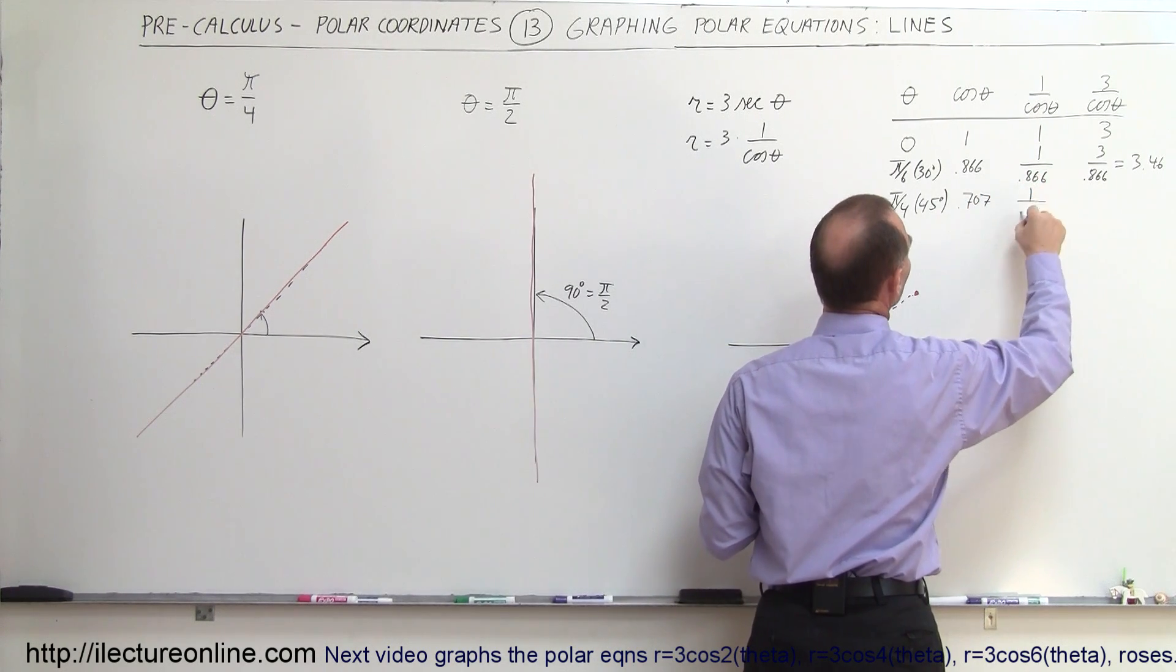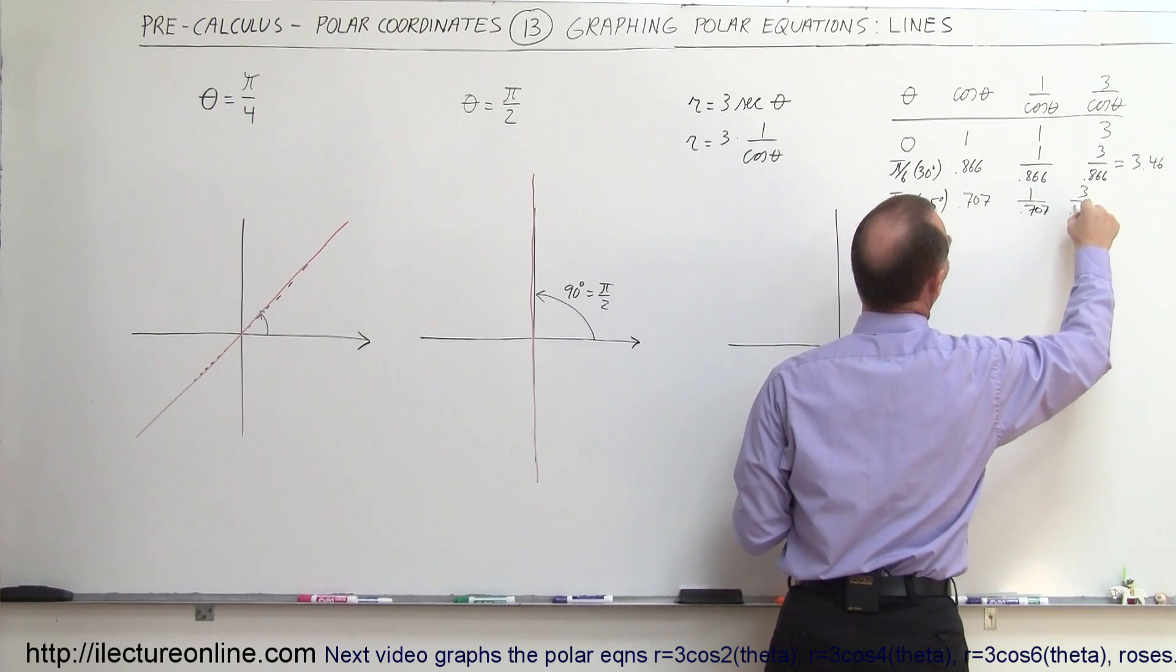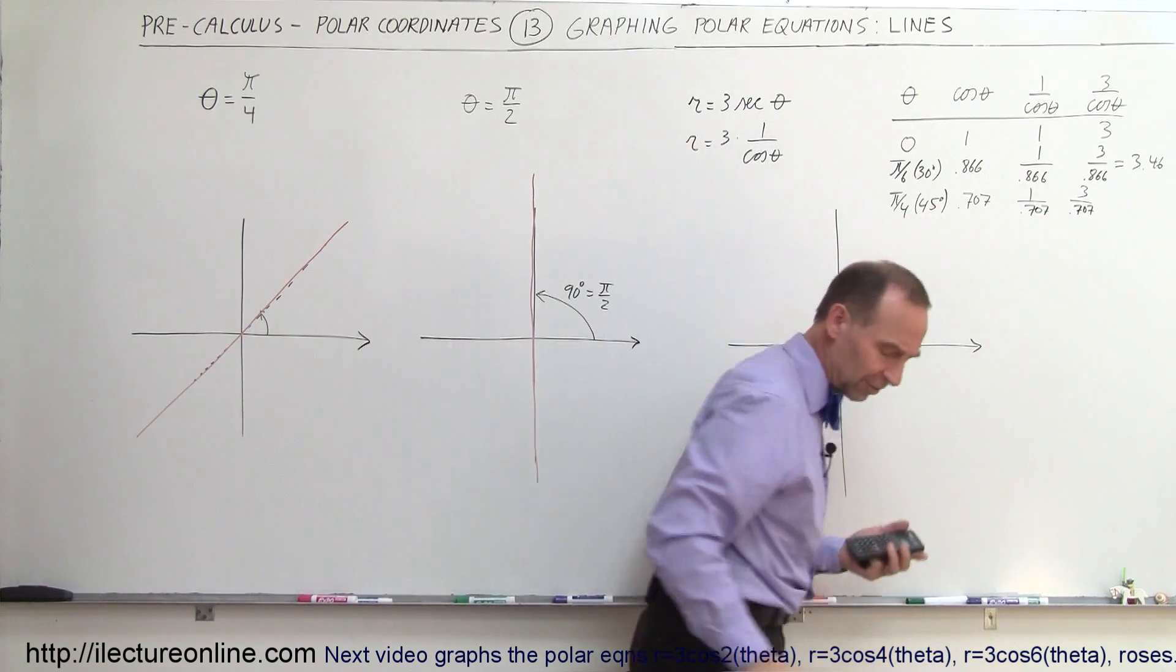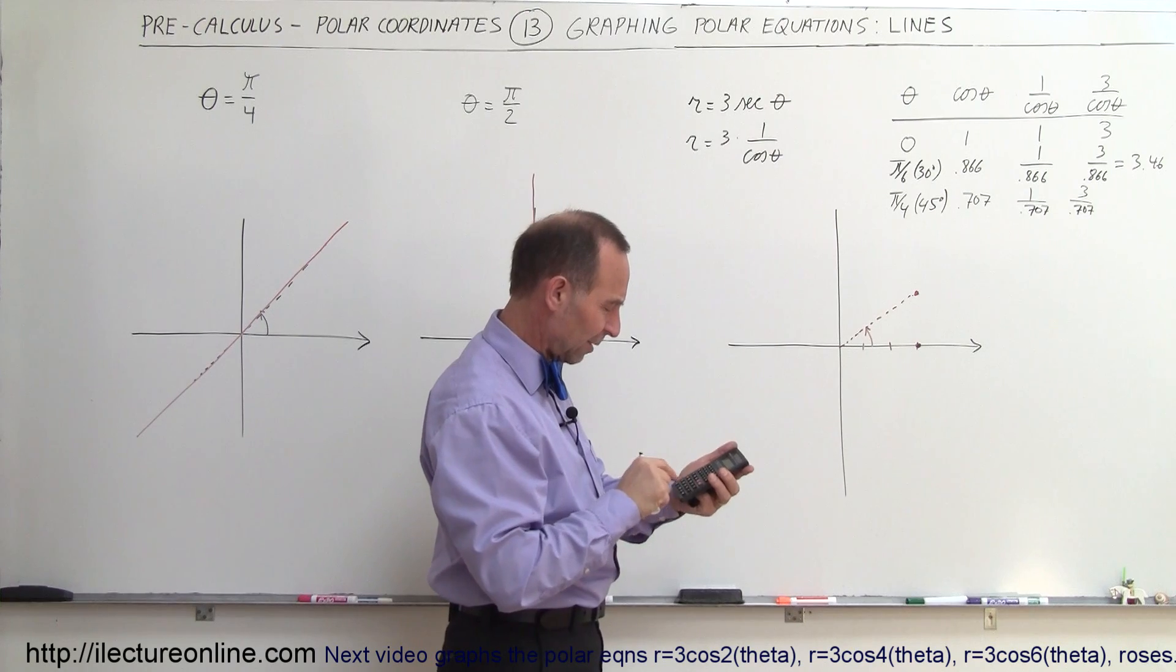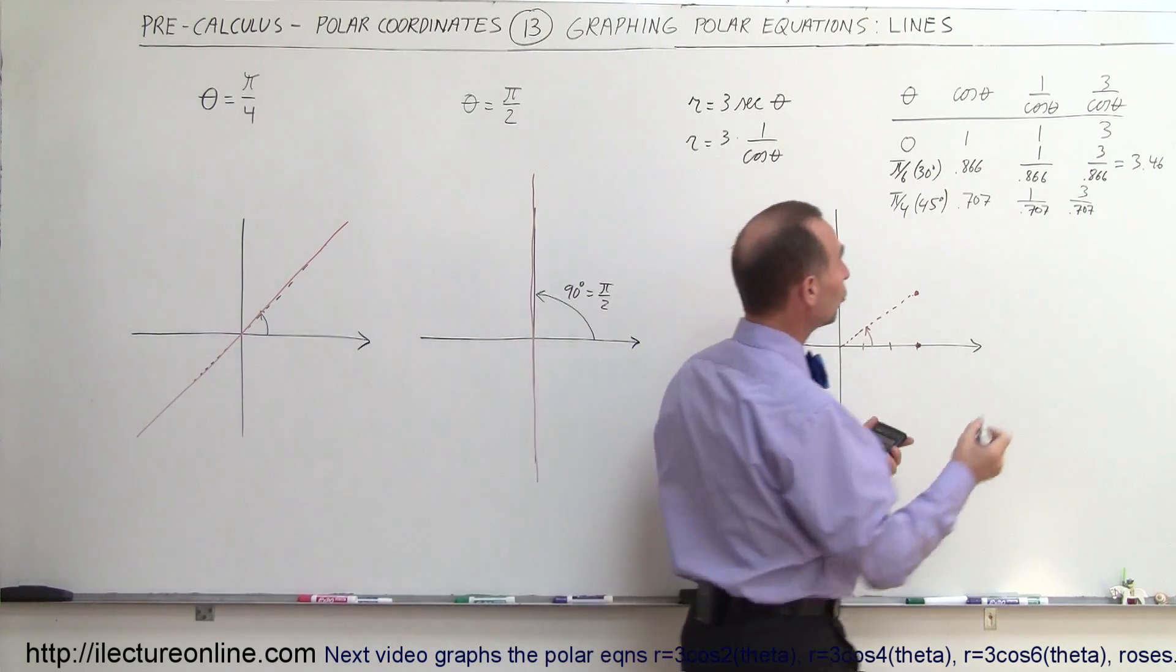That would be equal to 0.707, and 1 over 0.707, and then 3 divided by 0.707. Now let's see what that is equal to. So we have 3 divided by 0.707, and we get 4.24.